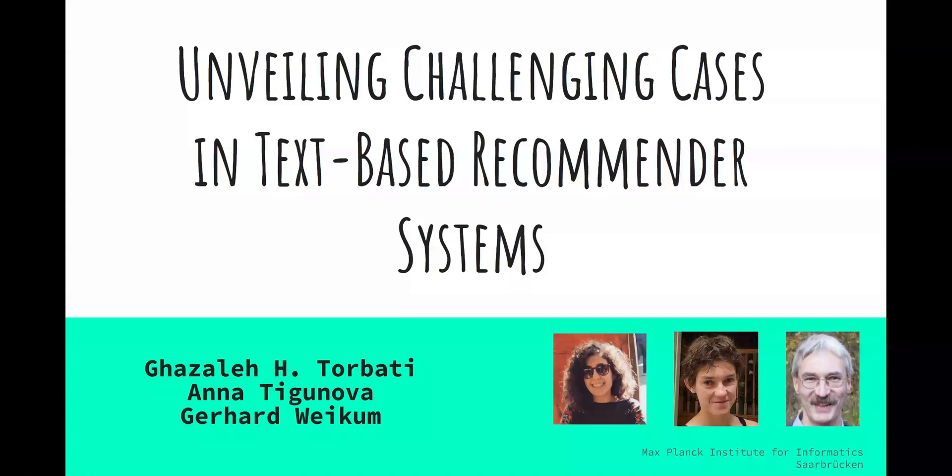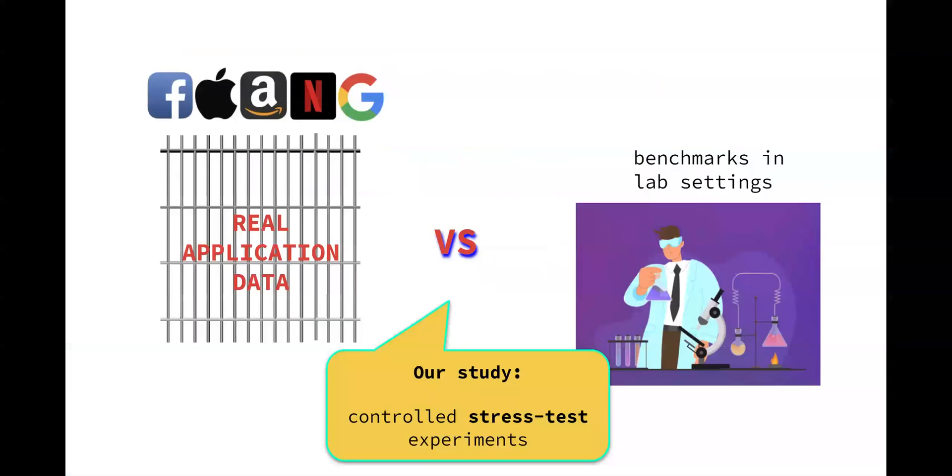Hello everyone, in this video I will present our paper: Unveiling Challenging Cases in Text-Based Recommender Systems. In the recommendation domain, real application data is usually only available to big companies, whereas lab studies use heavily pre-processed benchmark data which prevents tapping into really challenging cases. Our study stands in between these two extremes, driven by controlled stress test experiments.